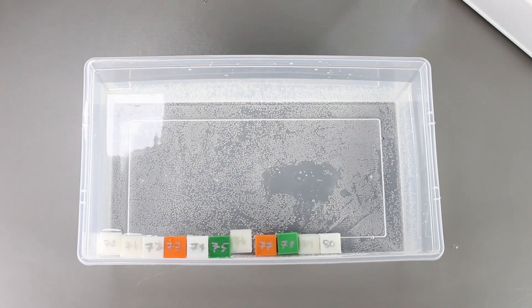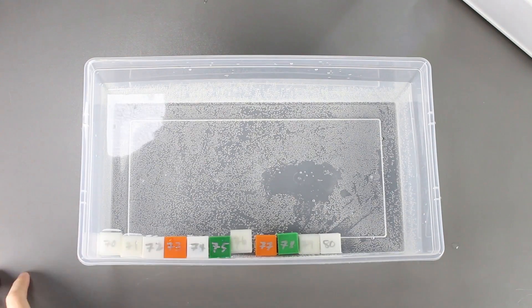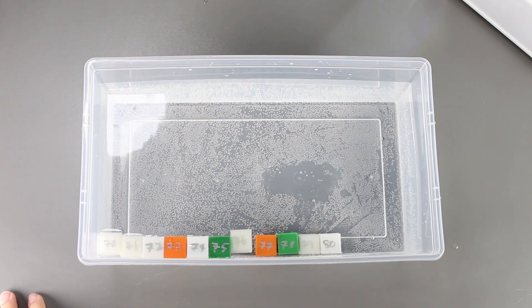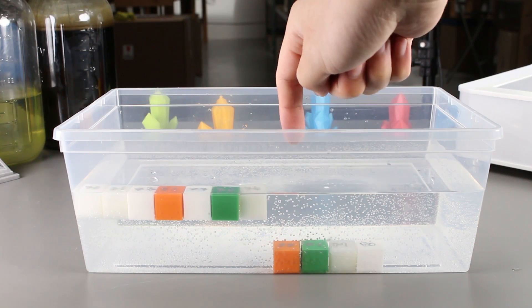So from this experiment, we can see that it is between 76% to 77% where PLA actually becomes positive or negative buoyancy.